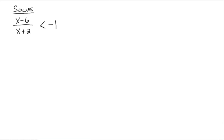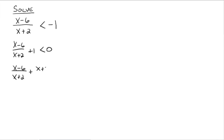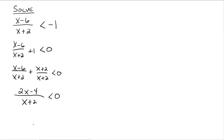The second example is different in that you don't have 0 on the right side. The goal is to get everything on one side and 0 on the other — add 1 to both sides, giving x minus 6 over x plus 2 plus 1 is less than 0. Then write the left-hand side as one fraction by adding them together using the common denominator x plus 2. Writing 1 as x plus 2 over x plus 2 gives 2x minus 4 all over x plus 2 is less than 0.